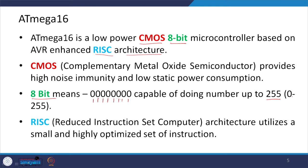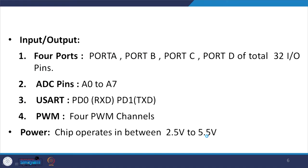The RISC architecture — reduced instruction set computer architecture — utilizes a small and highly optimized set of instructions. The ATMEGA16 has 4 ports: port A, port B, port C, and port D, for a total of 32 input and output pins. Analog-to-digital converter pins are A0 to A7, serial pins PD0 (RXD) and PD1 (TXD), 4 PWM channels, and the chip operates between 2.5V to 5.5V.